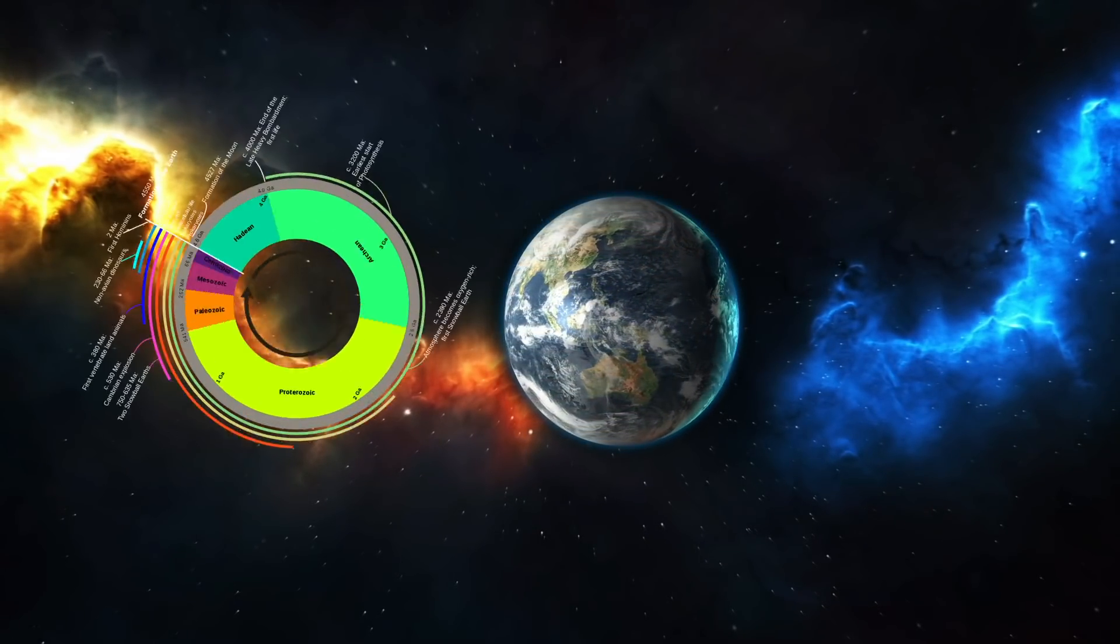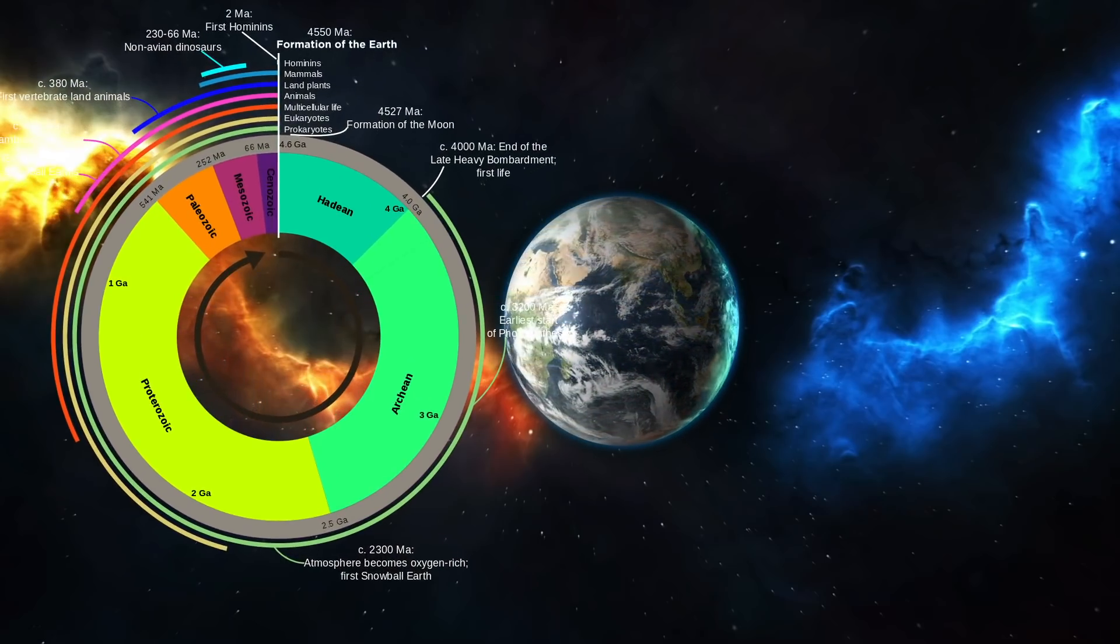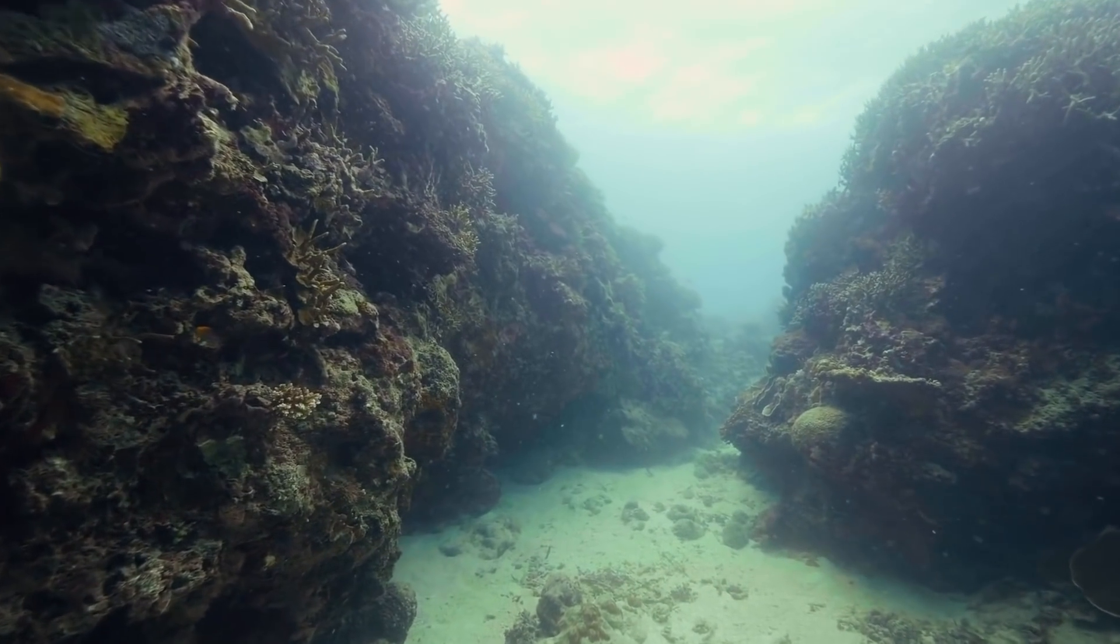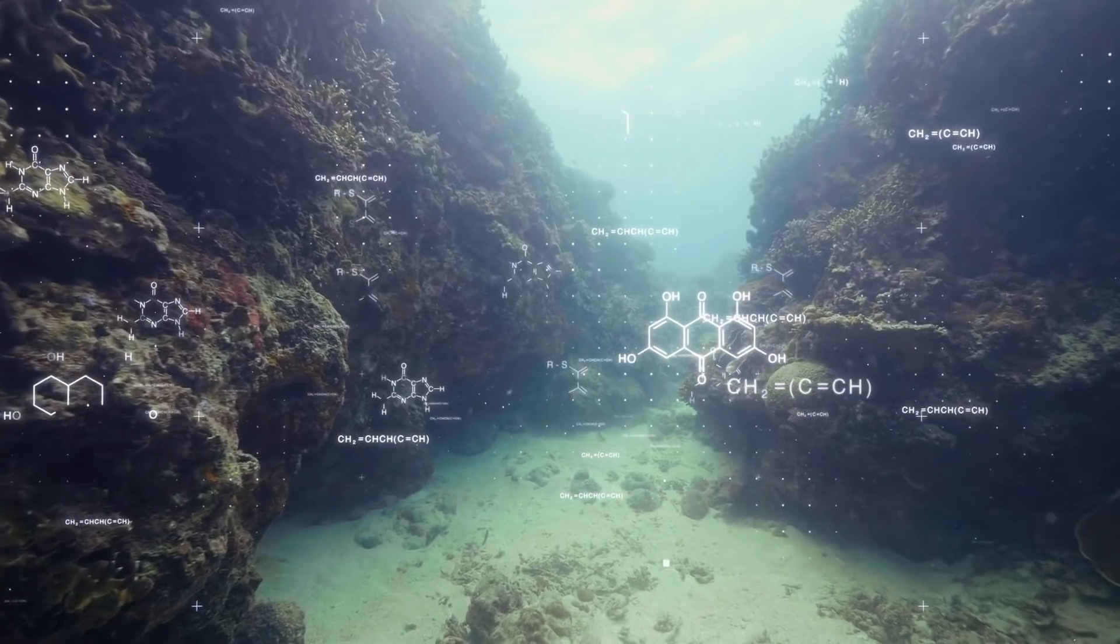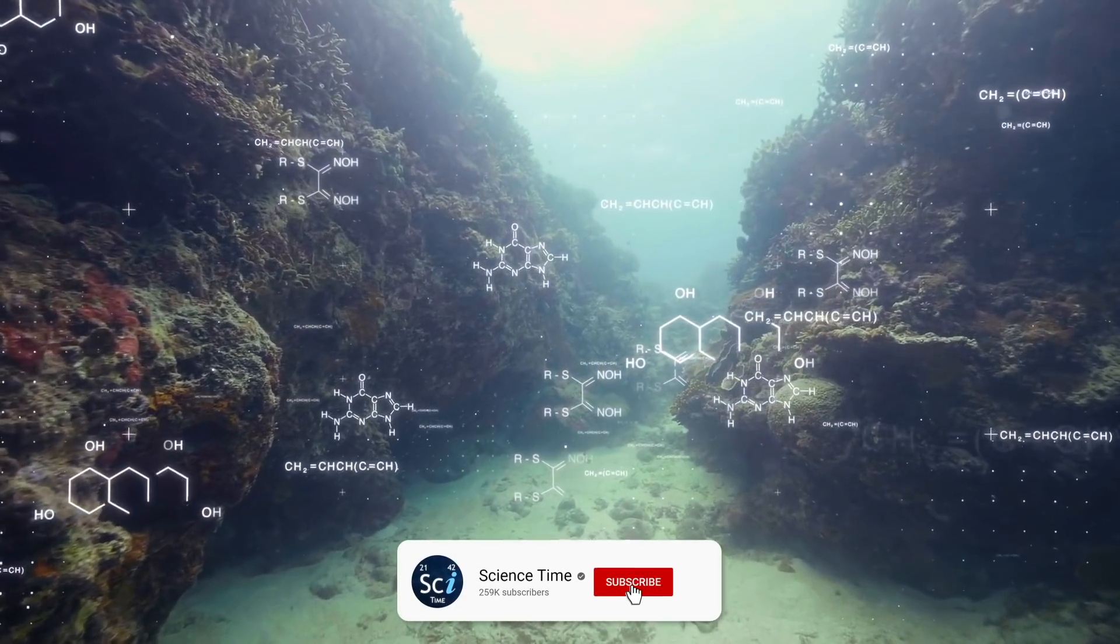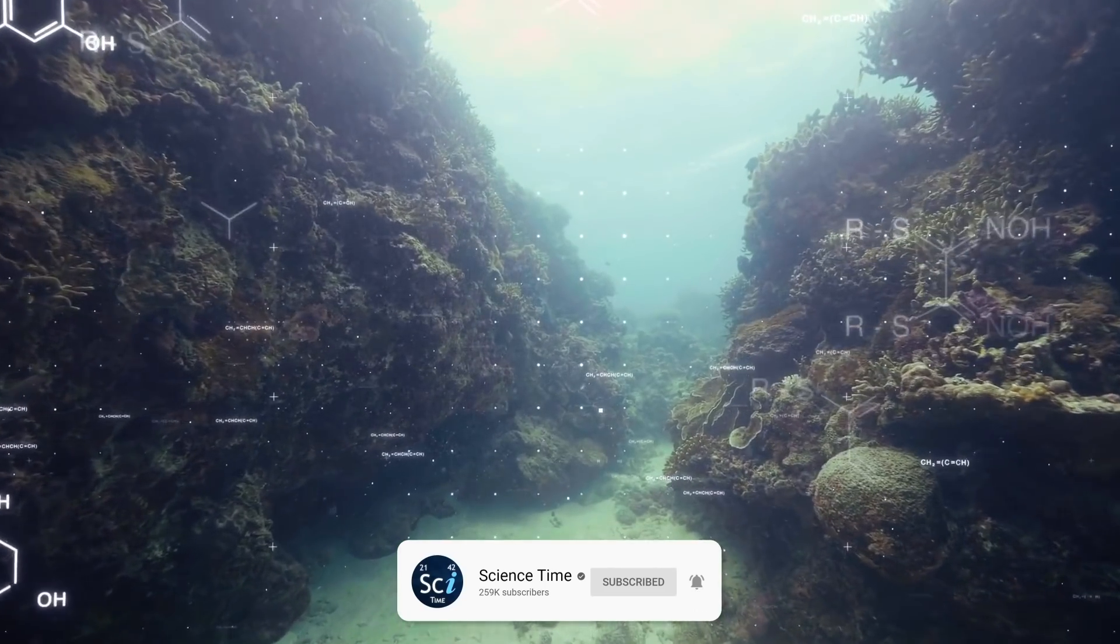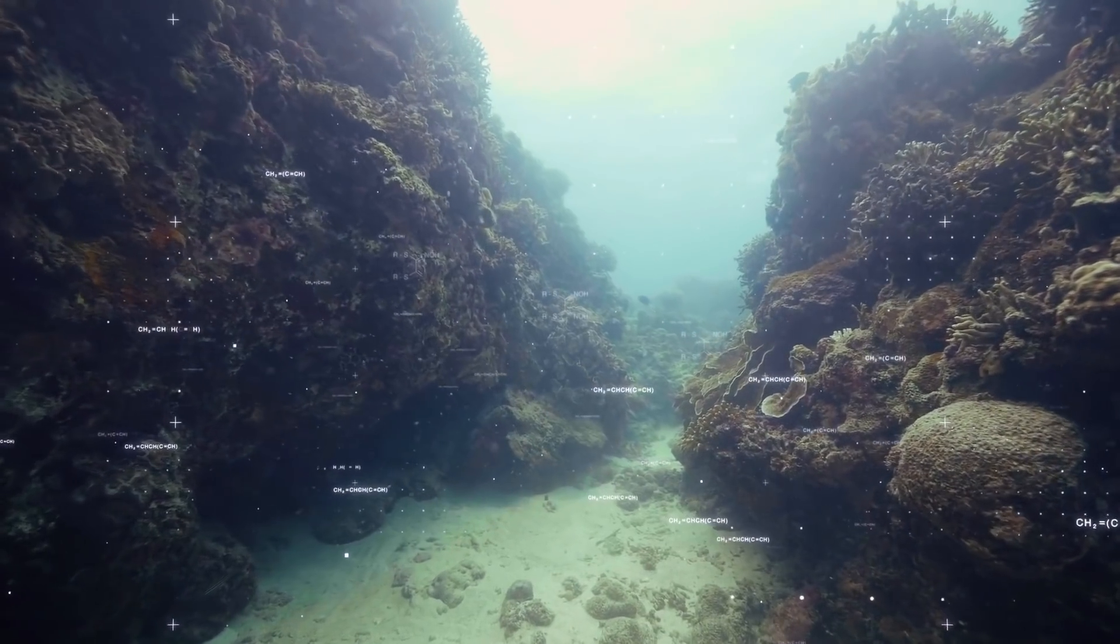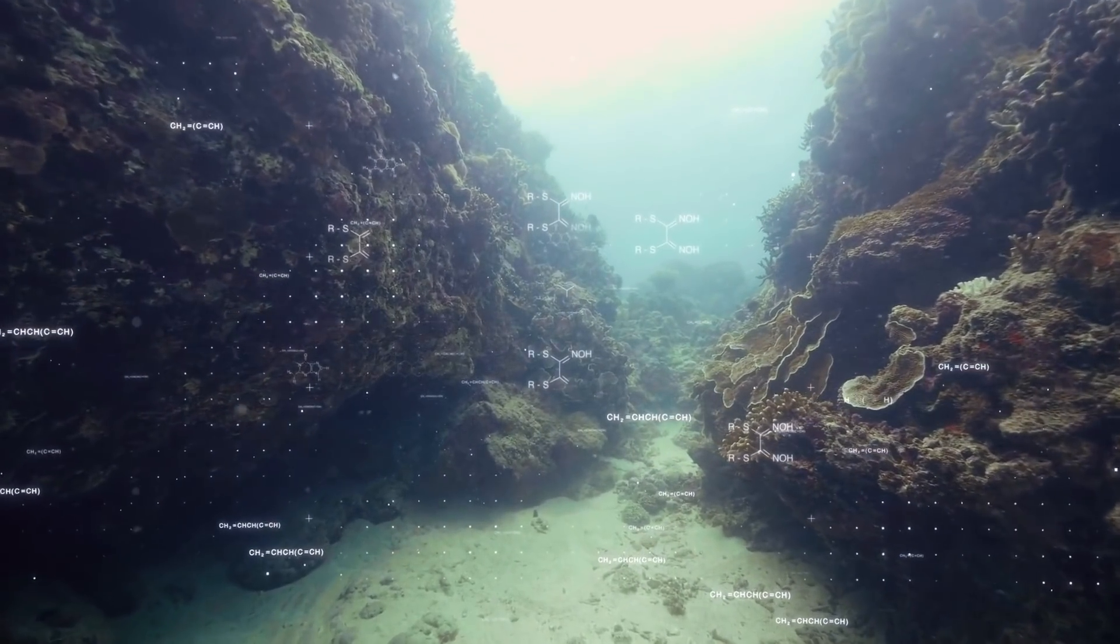Certainly 3.8 billion years ago, possibly even further back than that, we see evidence of life on Earth. Somewhere along the line, geochemistry, active geochemistry became biochemistry on Earth. We have some idea that if you get gradients of temperature and acid and alkaline and the conditions naturally present on the surface of oceans, then complex carbon chemistry spontaneously happens.